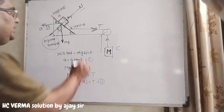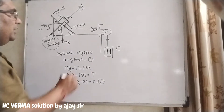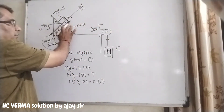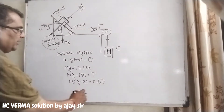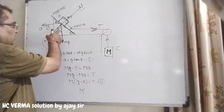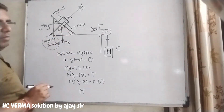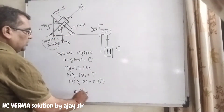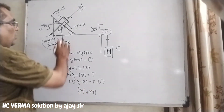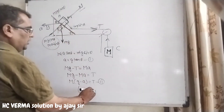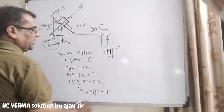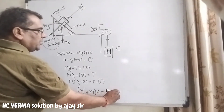Ab hum yahan par aate hain. Yahan par jab baat karte hain T ki, toh yeh kin ke equal hoga — in dono ke weight aur acceleration ke barabar hoga. Yaani yahan hoga m dash, kyunki triangular block ka mass m dash hai. Chhota wala block isi ke upar rakha hua hai, toh yeh m hai, aur in dono ka mila karke acceleration T ke barabar rahega — equation number third.